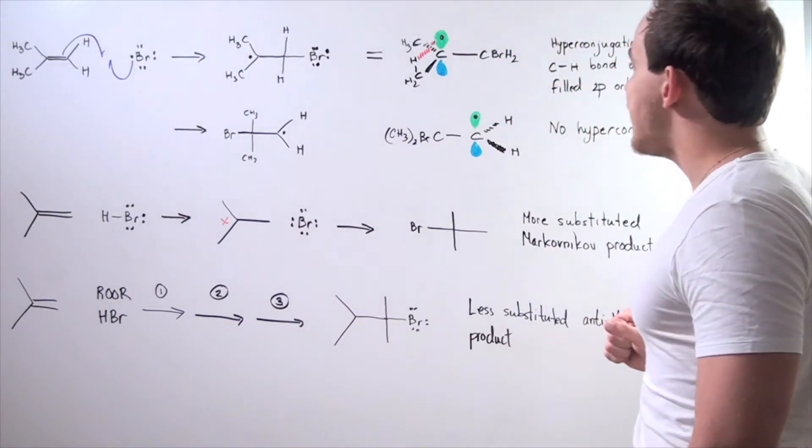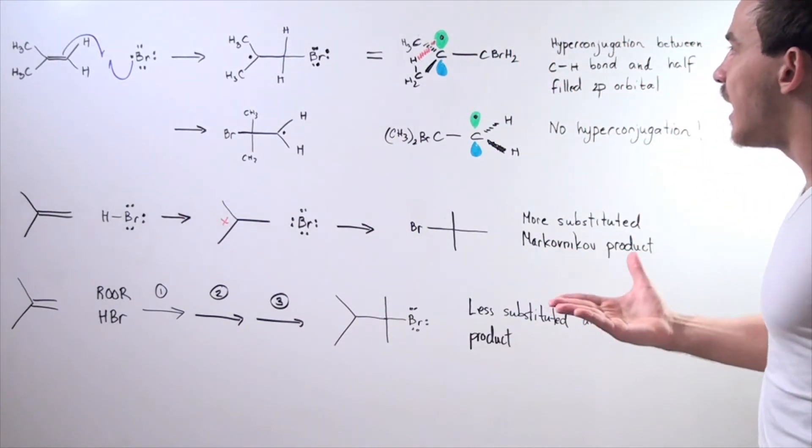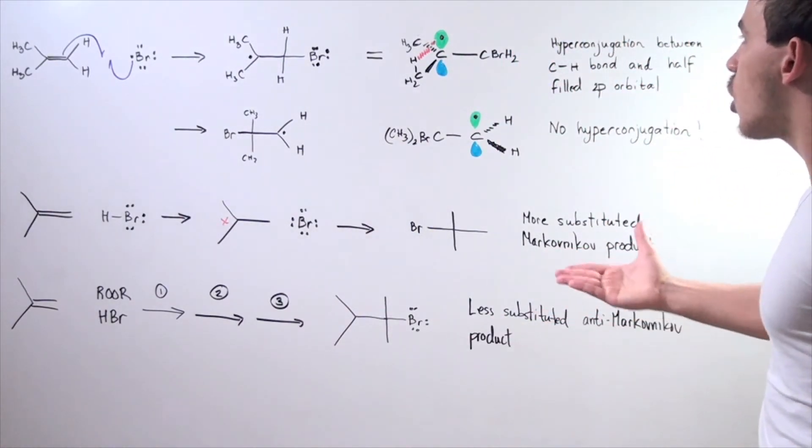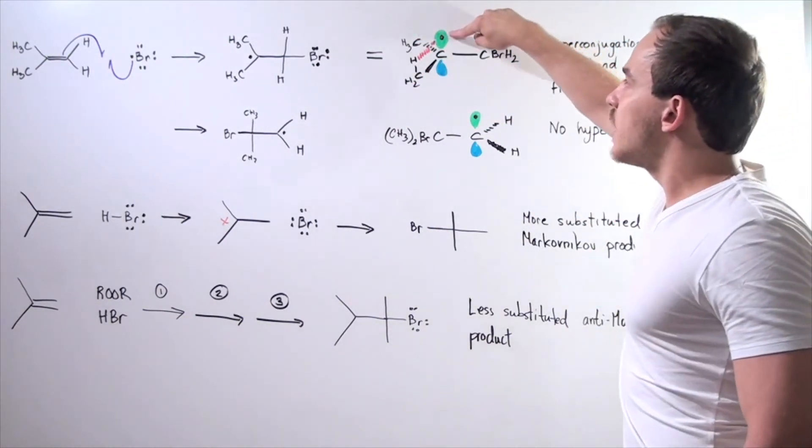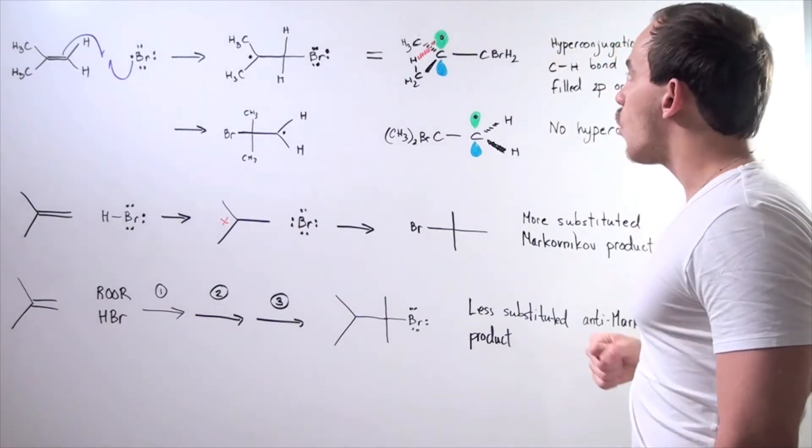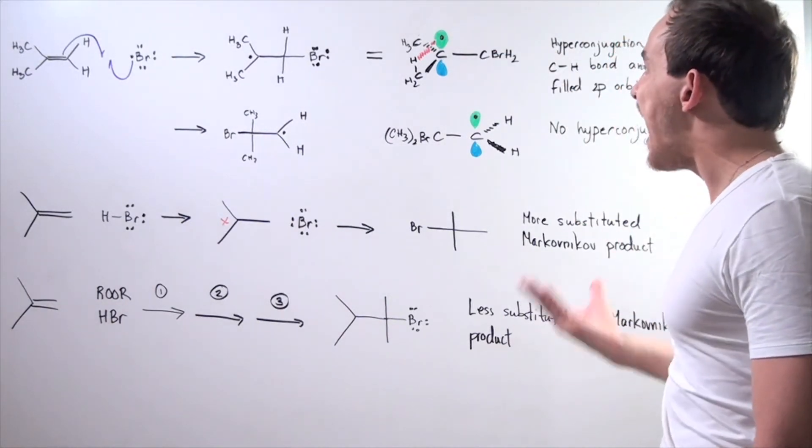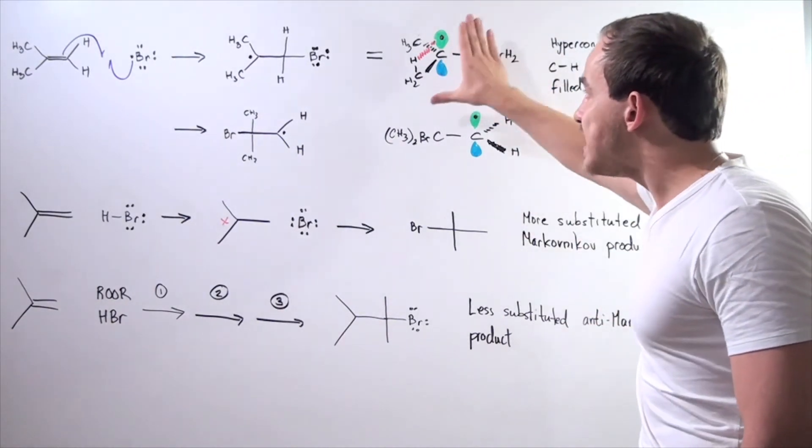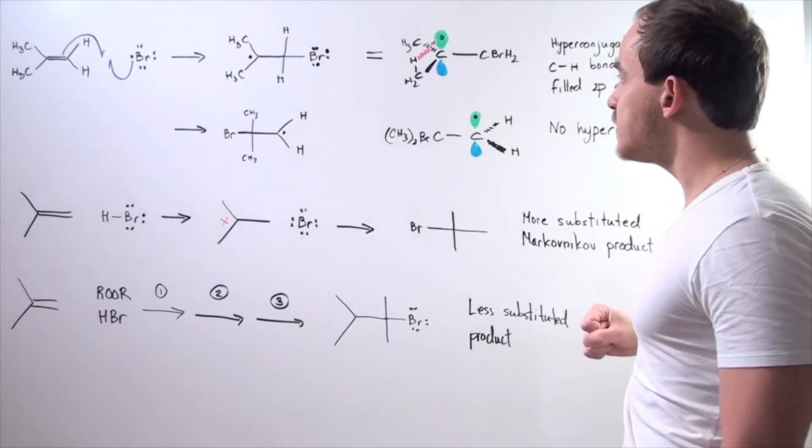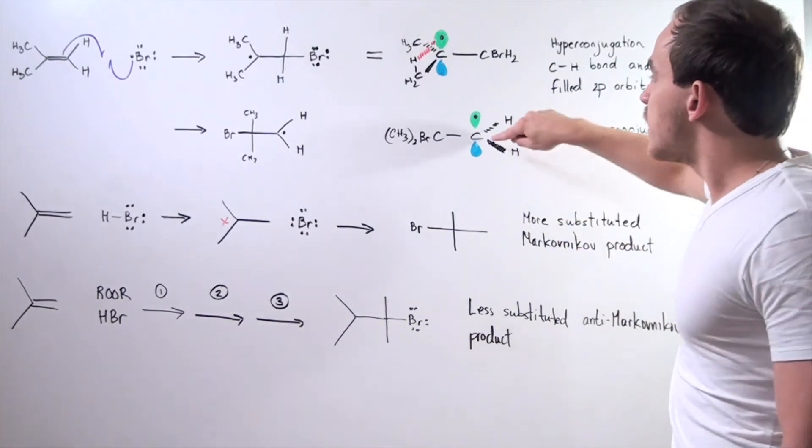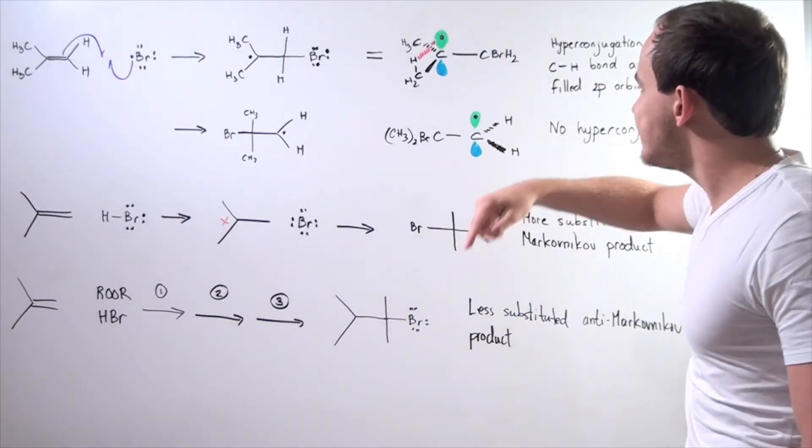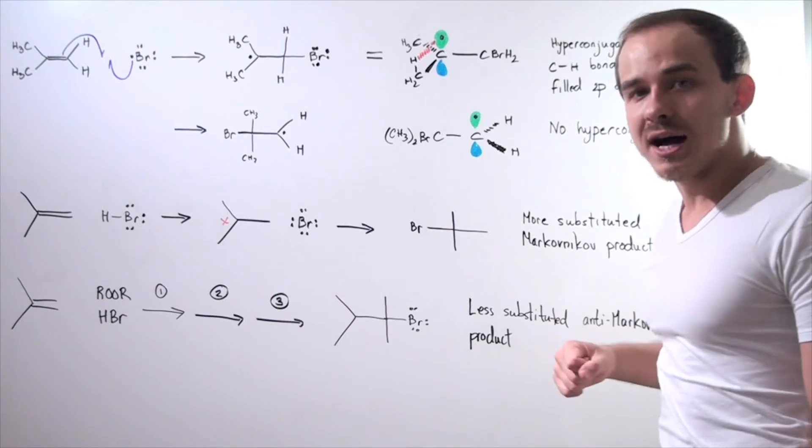Recall that hyperconjugation is simply the stabilizing interaction between the carbon H bond, any of these carbon H bonds, and the electron in the 2P orbital. Notice that we have this hyperconjugation effect taking place on this molecule, and not on this molecule because this carbon does not have adjacent CH bonds.